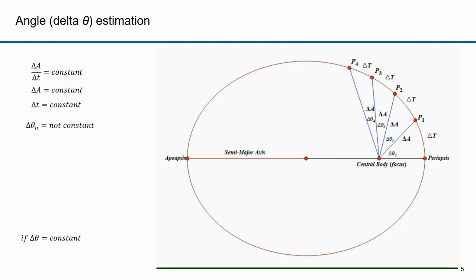We could have set this up differently by using a constant angle, so delta theta would be constant for each wedge. According to Kepler's second law, delta A over delta t must be constant. If delta theta is constant, then delta A must vary, which means delta t would also have to vary — delta A and delta t varying in proportion so that delta A over delta t remains constant. Holding delta t constant makes the timing easier, and when I set this up as a simulation I'd rather use a constant time step.